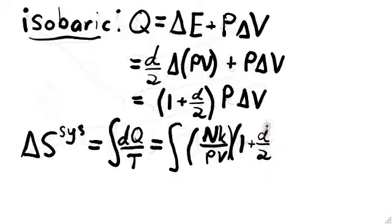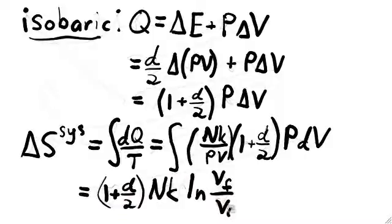After substituting this and the ideal gas law into the integral for delta S, we can turn it into an integral over V. This integral is also easy to perform, and we get a formula for the change in entropy in an isobaric process.